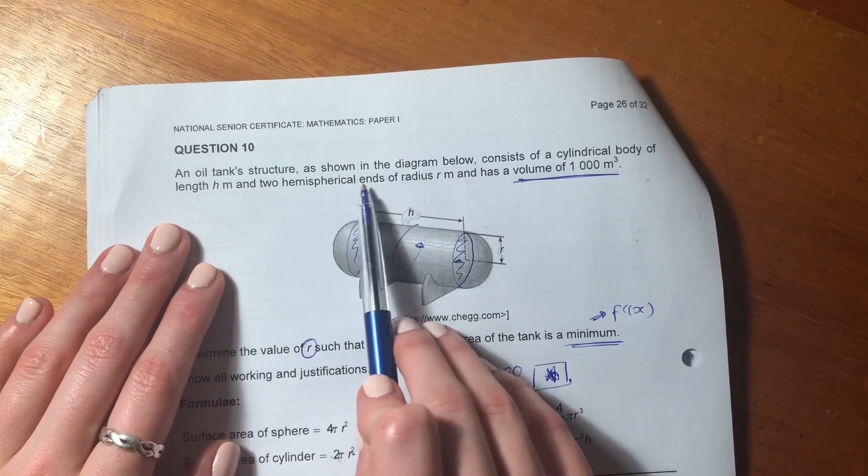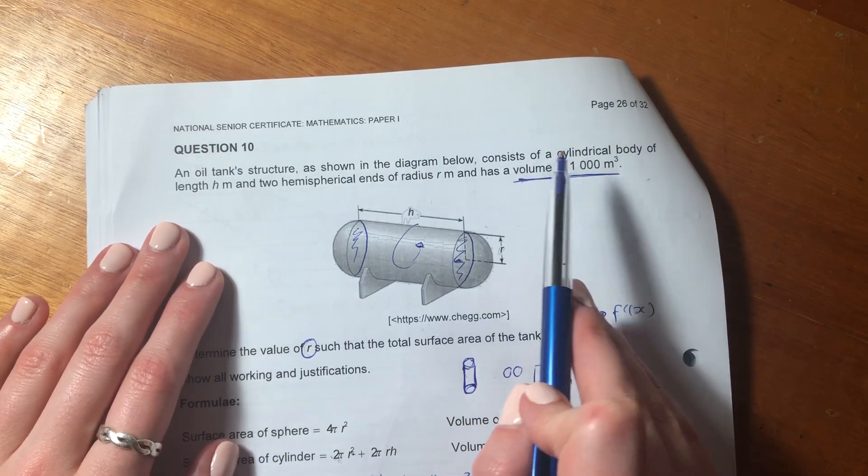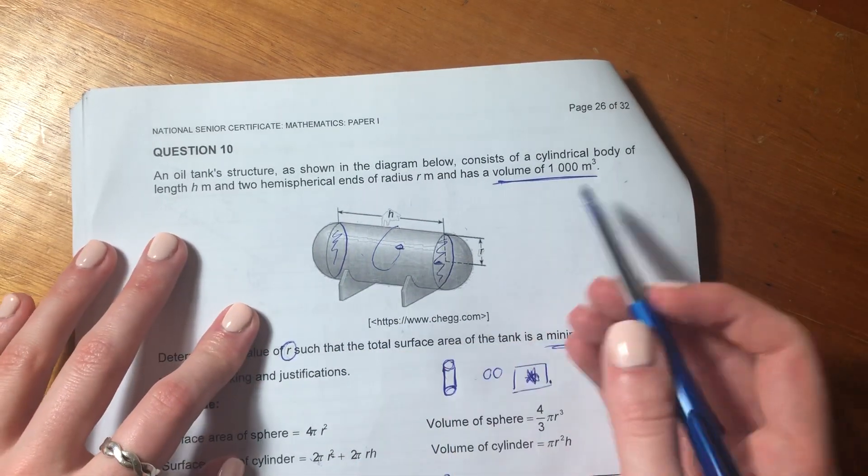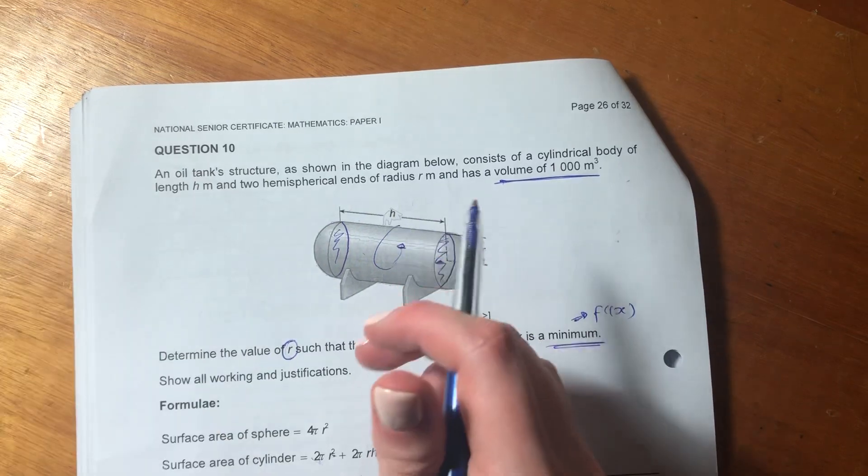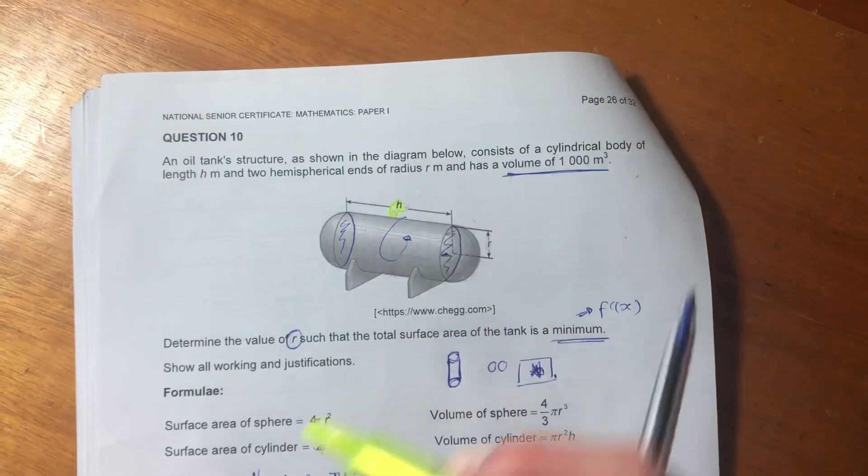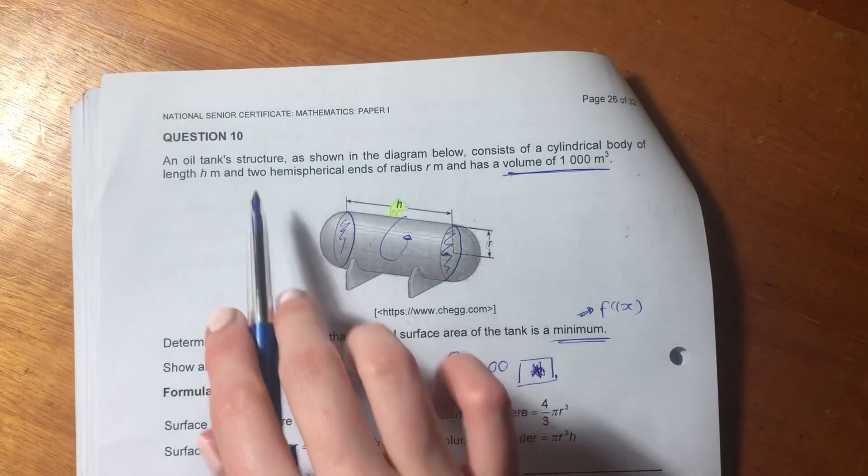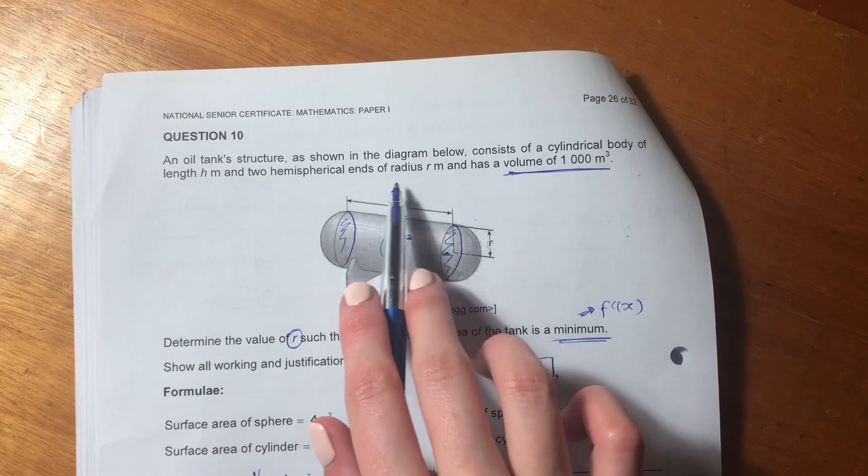So it says here, an oil tank structure, as shown in the diagram below, consists of a cylindrical body of length h, let's just color this in, and two hemispherical ends of radius r.